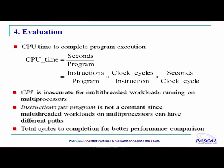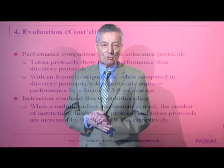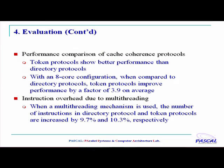Instructions for a program is not a constant since multi-threaded workloads can have very different paths in a multiprocessor. So we focused more on total cycles for completion for better comparison. It turns out, as you will see when you read the paper, that the token protocol has much better performance than the directory protocol.